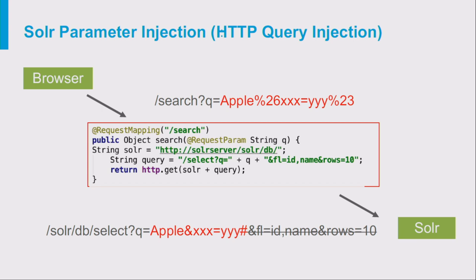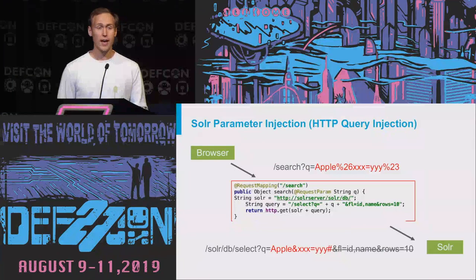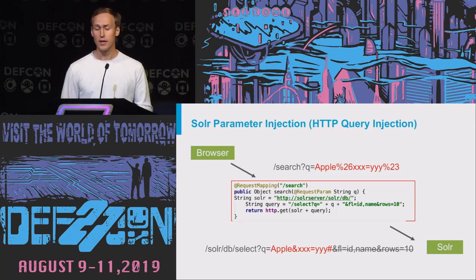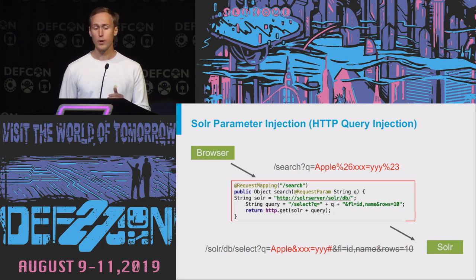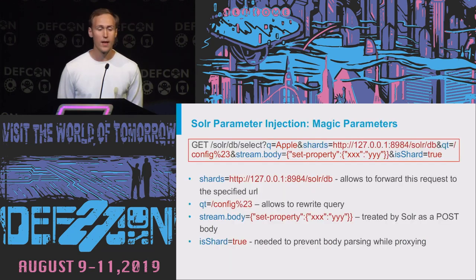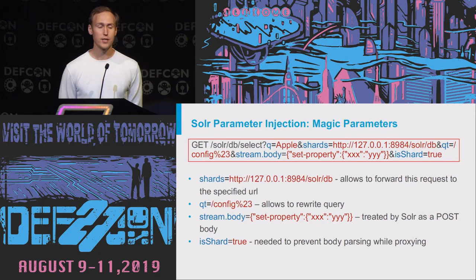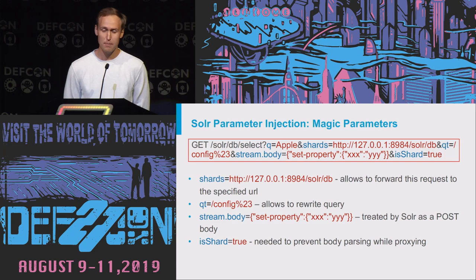I would call this vulnerability Apache Solr parameter injection, and it's basically a subset of HTTP query injections. Normally in HTTP query injections you are quite limited in terms of impact because you cannot control the full URL where the request will be sent. But thankfully, Apache Solr has some magic parameters that allow us to completely rewrite the query logic and perform some interesting things.